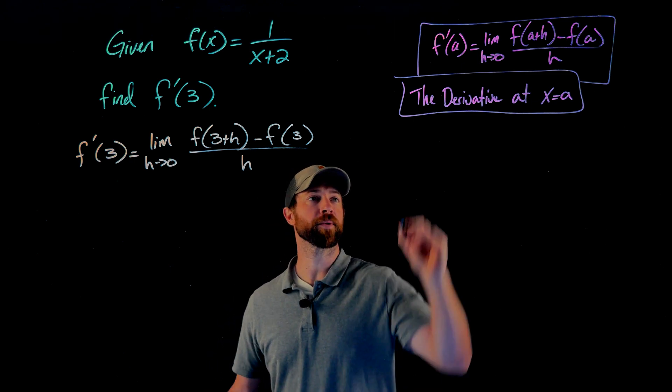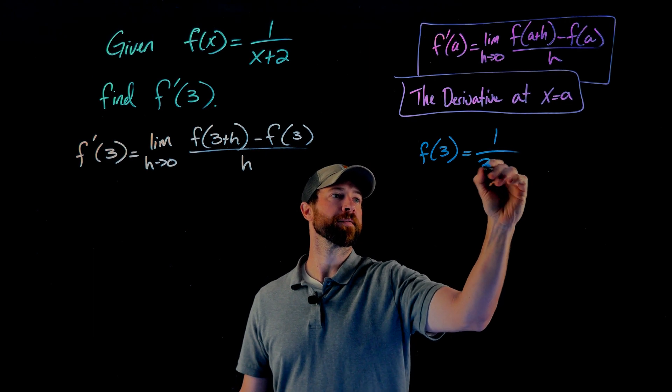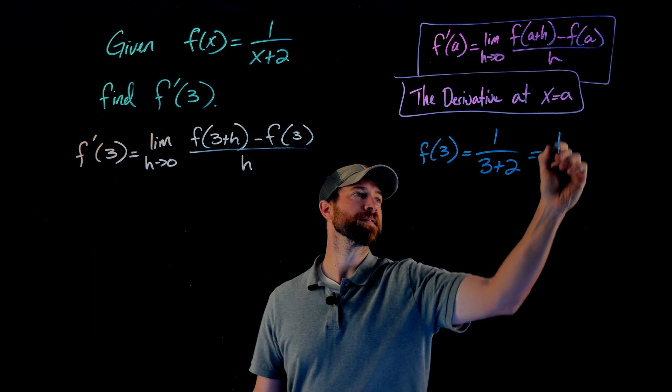Quickly just show that work here. f of 3 would equal 1 over the x value of 3 plus 2, which gives us 1 fifth.